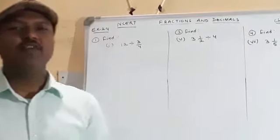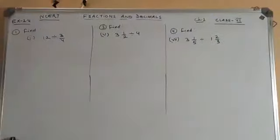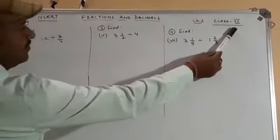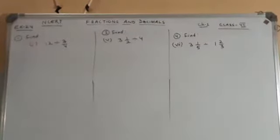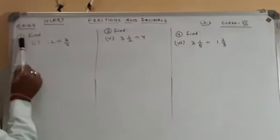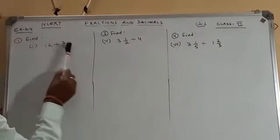Hello students, now we are going to solve some questions from exercise 2.4 of class 7 NCERT book, fractions and decimals, chapter 2. For question number 1, first part: find 12 divided by 3/4.